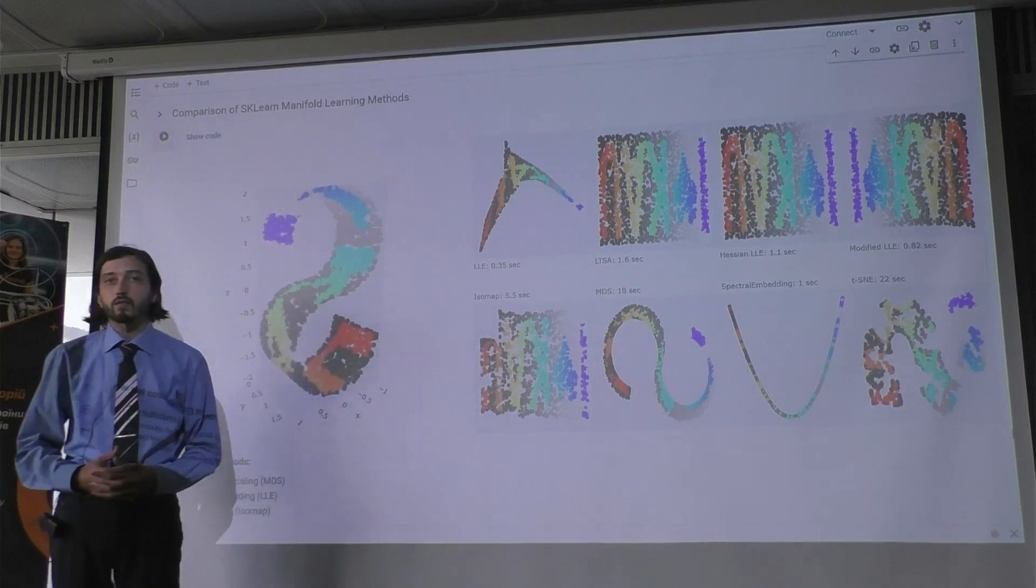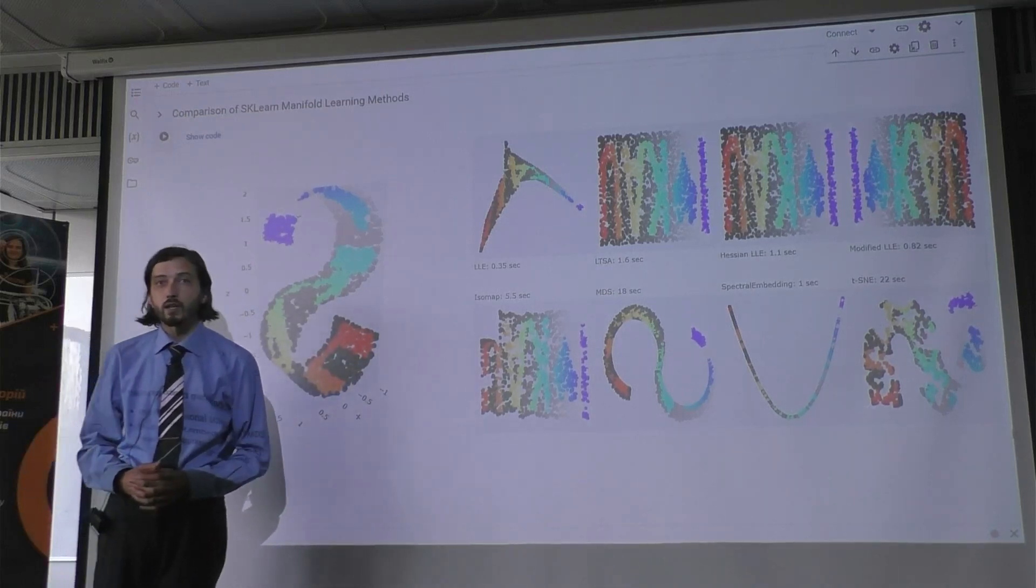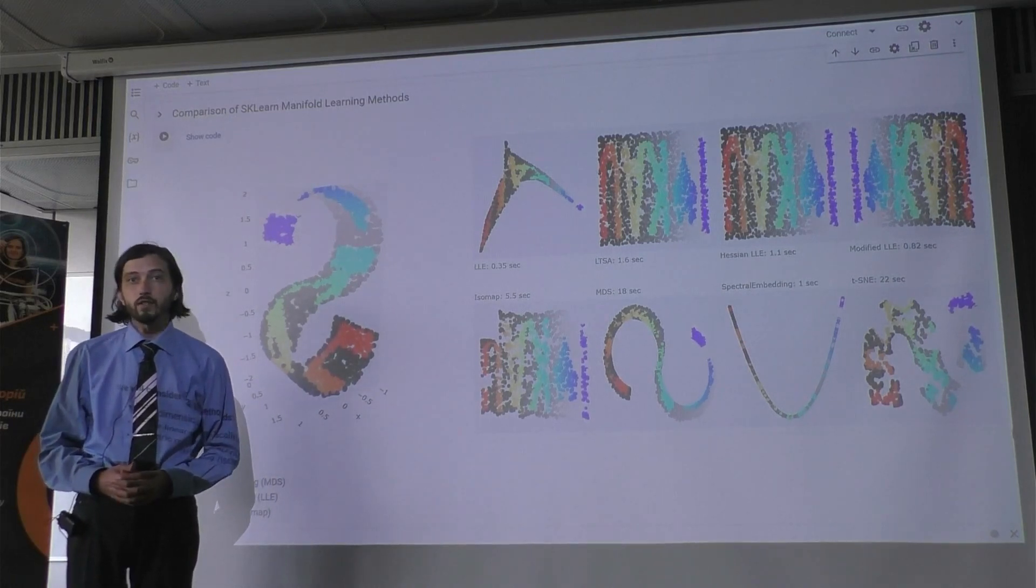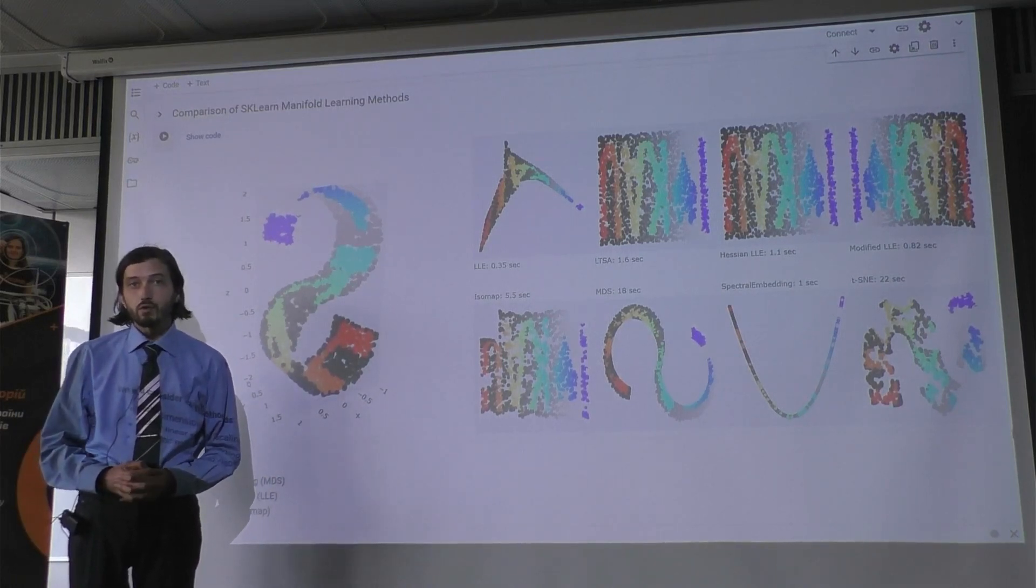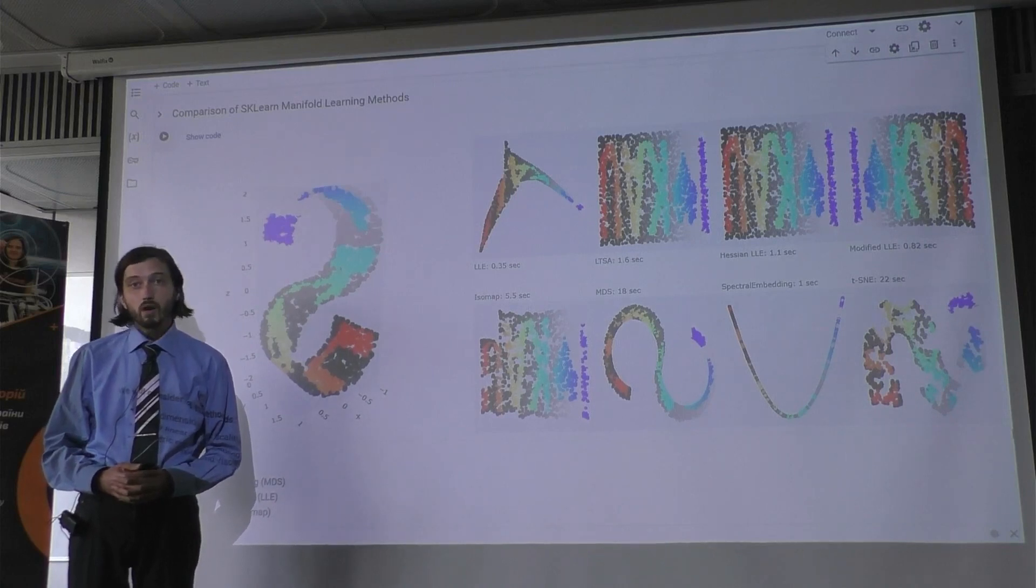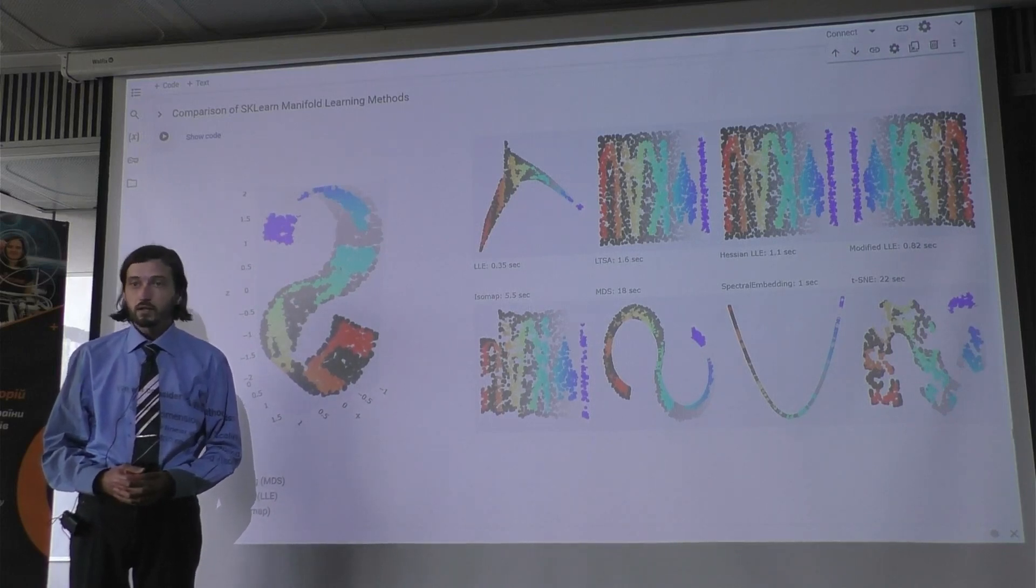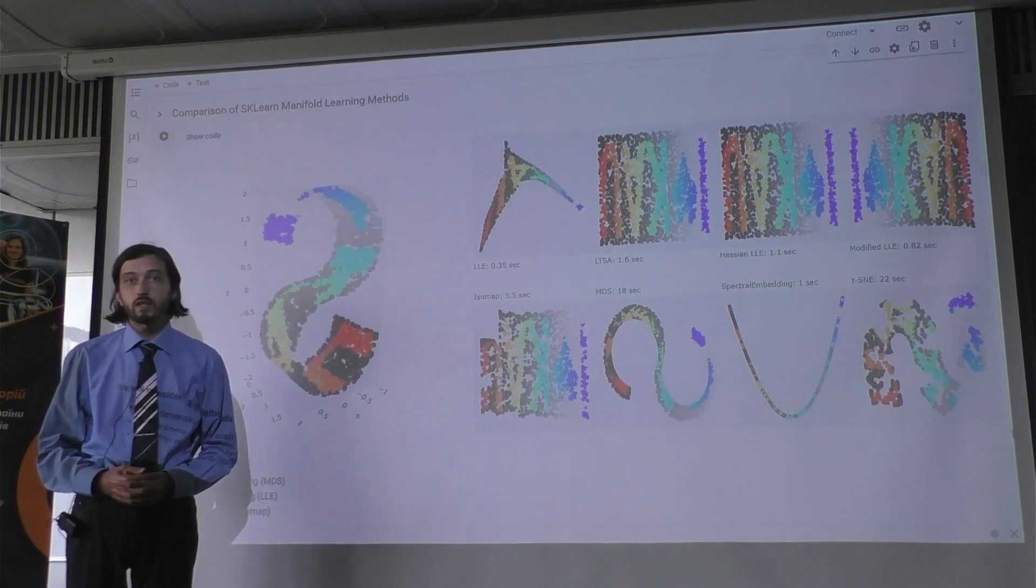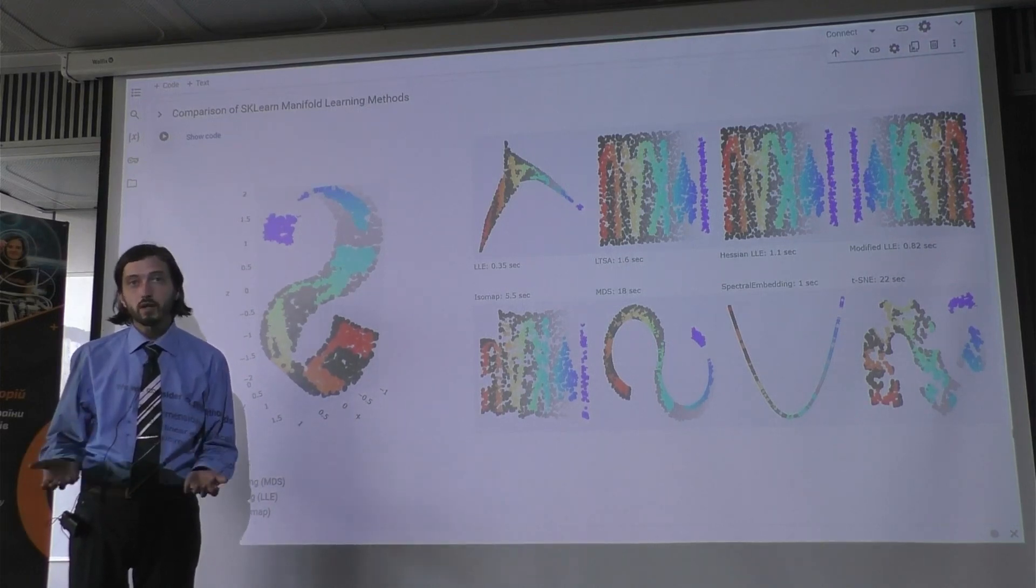And after these methods, after dimensionality reduction, we will move to extraction of topological features, and I will show you what is persistent homology and how to use that to extract some useful information from the multidimensional dataset or some sort of point cloud that you have.